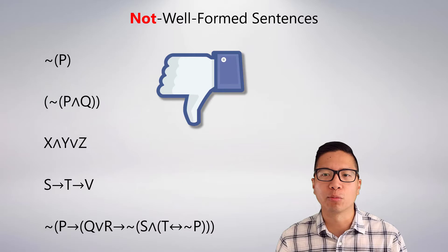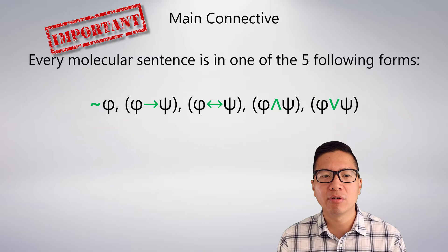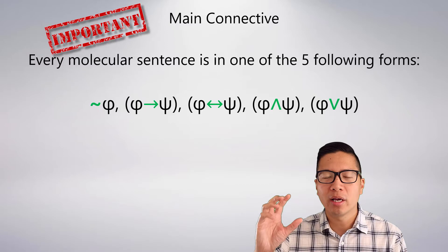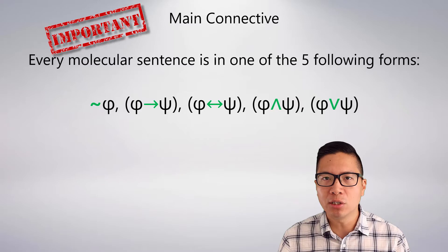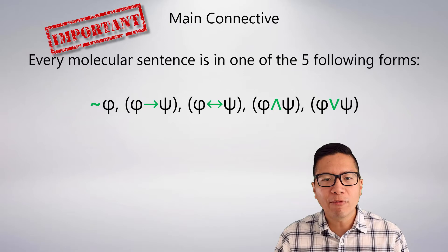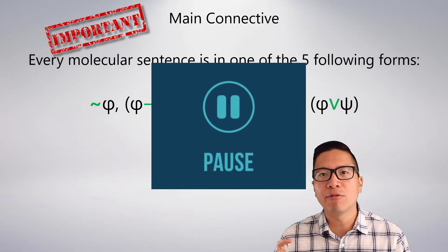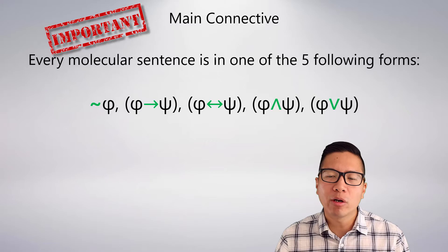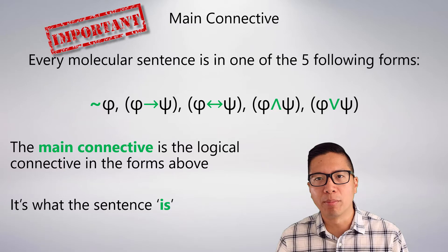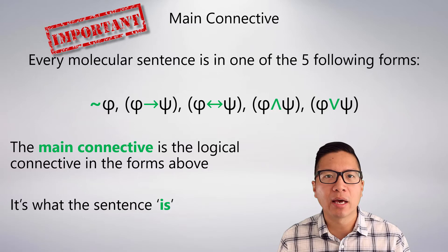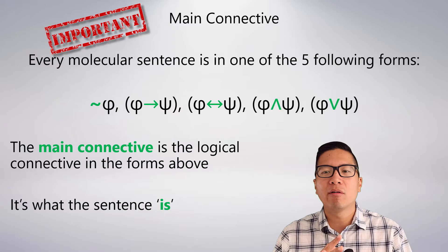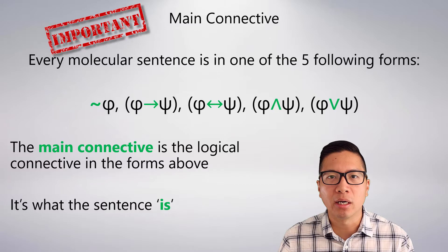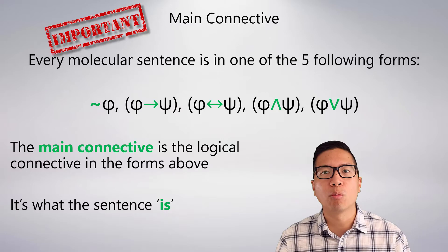This leads us to the actual full definition of what a main connective is. You don't need instant recall of the technical definition, but you really do need to understand it fundamentally. Every molecular sentence is one of five forms, following directly from how we generate well-formed formulas. The main connective is the logical connective that really dominates the sentence — it binds everything together and is fundamentally what the sentence is. It's the only connective we care about when evaluating properties of statements and arguments.